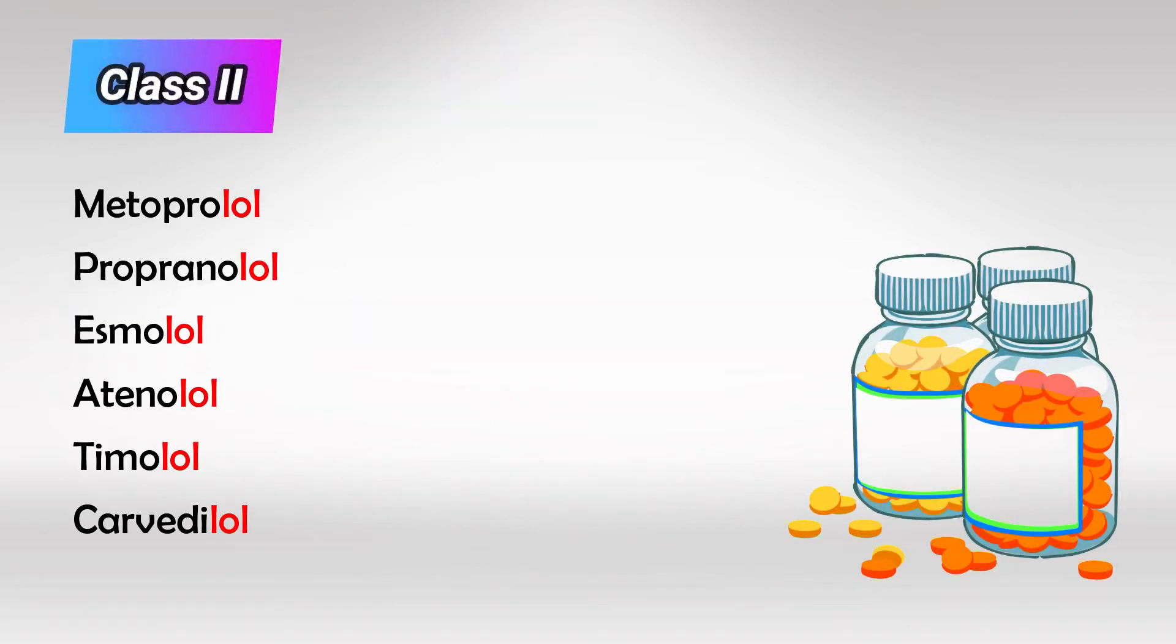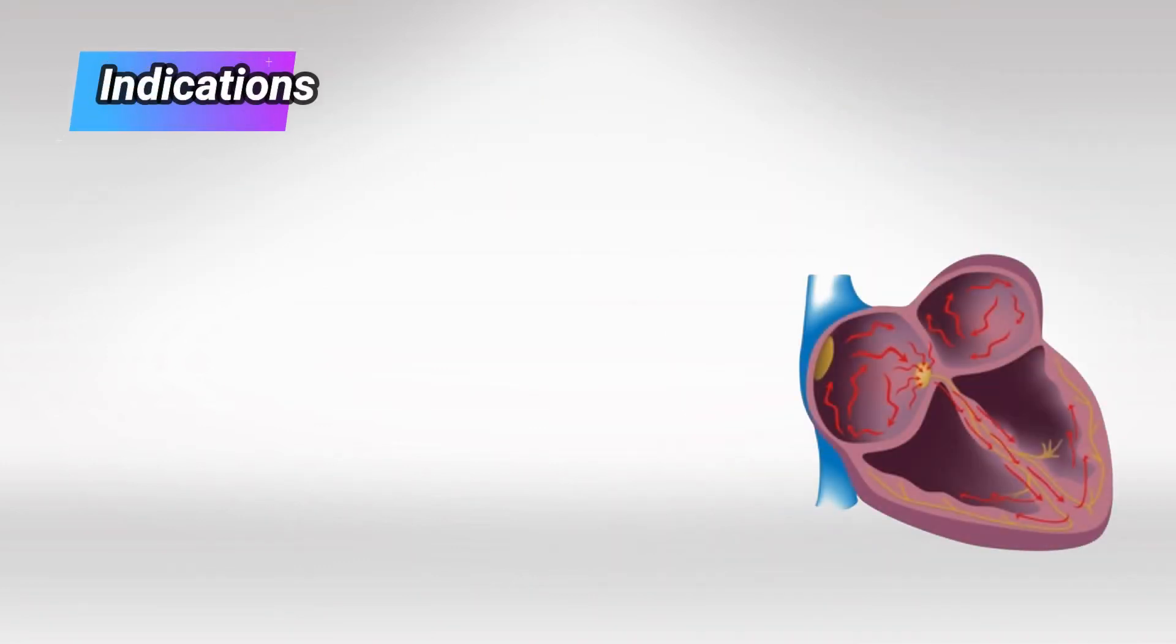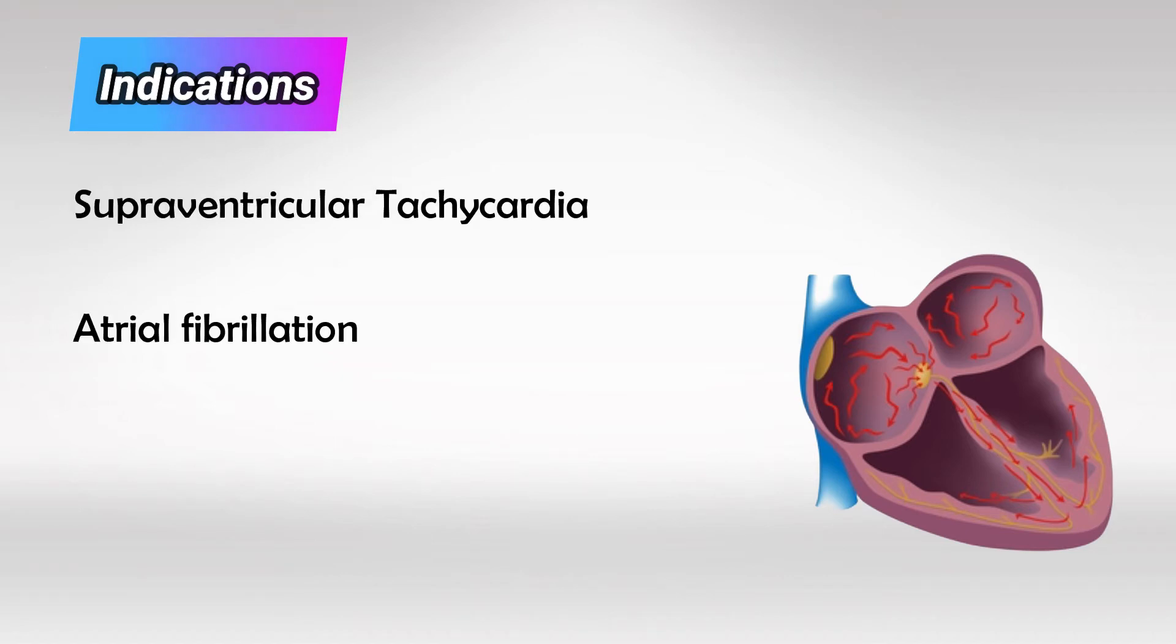Here are the medications for Class 2. Interestingly, their main action is not in the cardiac cells but rather in the SA and AV nodes. They slow down the neuronal activity in these nodes, decreasing the heart rate. They favor the AV node, so it makes sense they're used for any case where the heart rate is high, such as supraventricular tachycardia and atrial fibrillation.